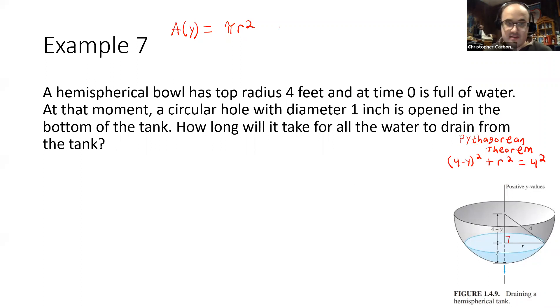So we could solve this for r squared by subtracting that 4 minus y squared. This makes 4 squared minus 4 minus y squared. So we could express this area as pi times, this would be 16 for that 4 squared, minus 4 minus y squared. And we could slightly simplify that to be pi times 8y minus y squared, since the 16s will cancel. And we would also let the gravitational constant g, in this case, be 32 feet per second per second.